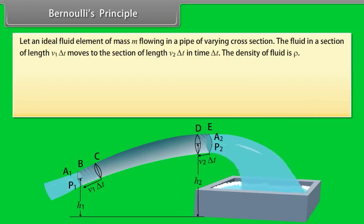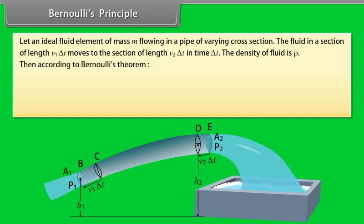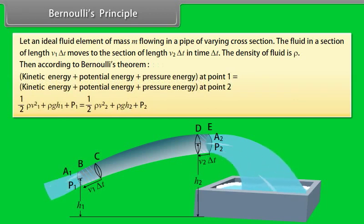Consider an ideal fluid element of mass M flowing in a pipe of varying cross-section. The fluid in a section of length V₁ΔT moves to the section of length V₂ΔT in time ΔT. The density of the fluid is ρ. According to Bernoulli's theorem, the sum of kinetic energy, potential energy, and pressure energy at point 1 equals the sum at point 2.